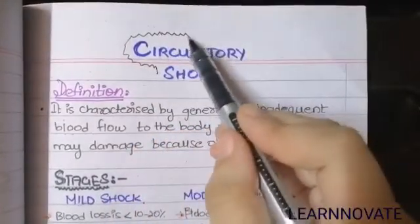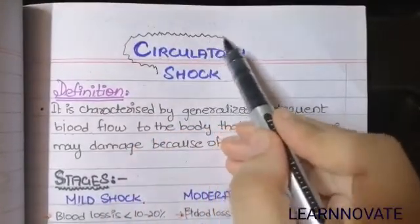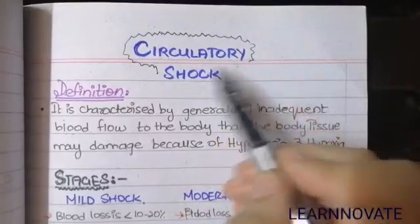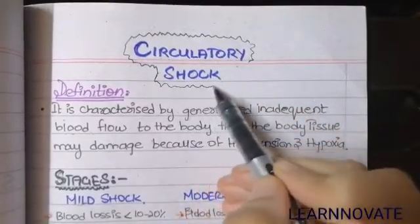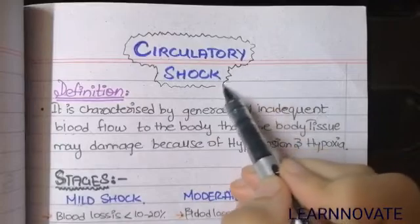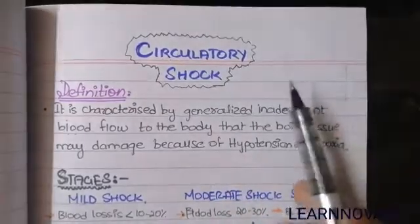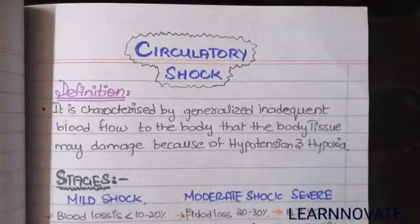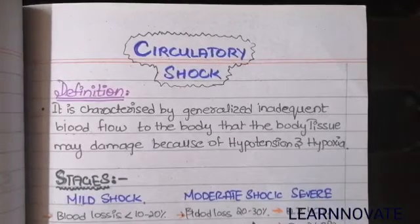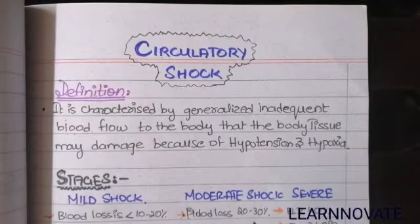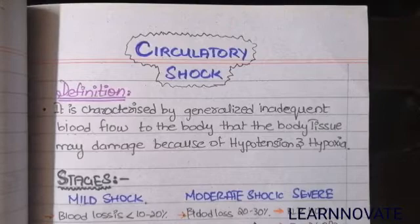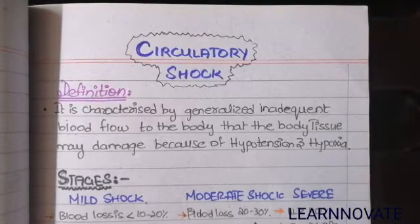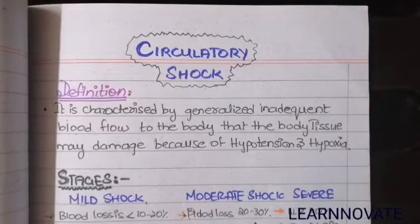Circulatory shock is an important topic of cardiology physiology. It is related to the failure of heart function, ultimately causing decreased blood flow to the tissues of the body. When there is decreased blood flow to the tissues, it leads to hypoxia, which causes anaerobic respiration, acidosis, and other conditions that result in cell death.